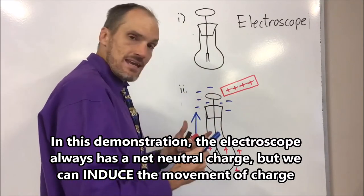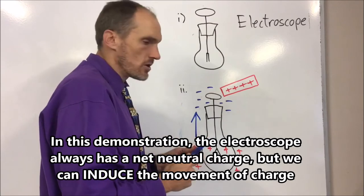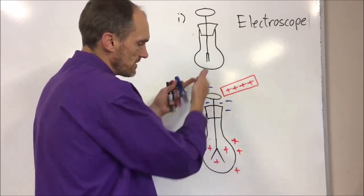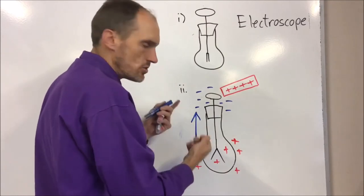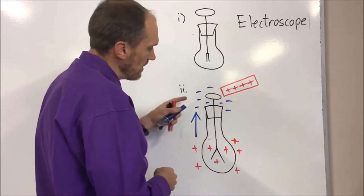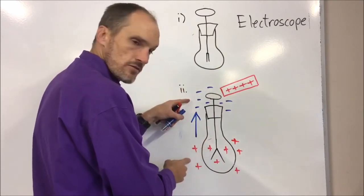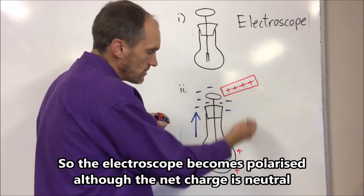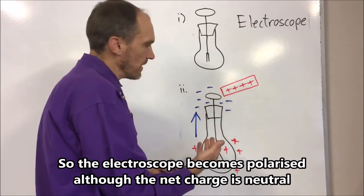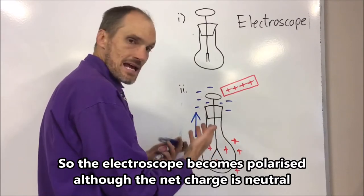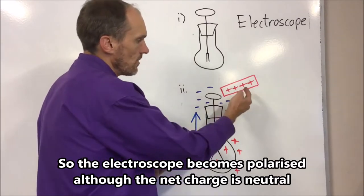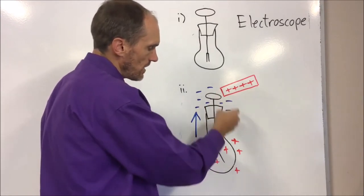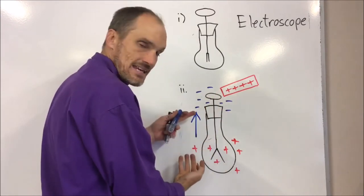We are talking about induction here because we are inducing the movement of charge when the electroscope is in this state. We are inducing a polarization — we have a negative and a positive end — so that is polarised. That is why we call it induction. We are using triboelectrically charged objects to charge the electroscope by induction.